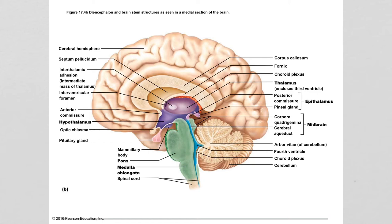The cerebrospinal fluid comes from blood taken to the choroid plexuses. The cerebrospinal fluid is made from the plasma of blood — it's kind of like plasma plus. We go into those details in lectures.